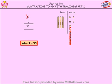So we found out that 44 take away 9 equals 35.